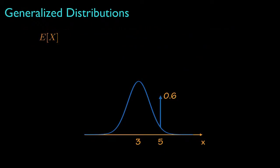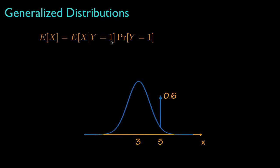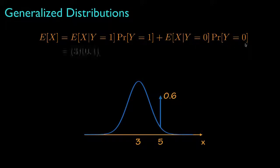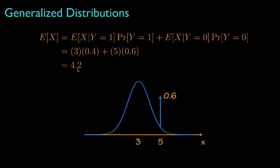From that, we can evaluate the expected value for the random variable x as the conditional expected value of x when y equals 1 times the probability that y equals 1, plus the conditional expected value of x when y equals 0 times the probability that y equals 0. The expected value for x when y equals 1 is 3, and the probability that y equals 1 is 0.4. The expected value for x when y equals 0 is simply 5, and the probability that y equals 0 is 0.6, giving us E[X] = 4.2.